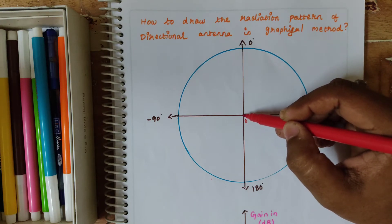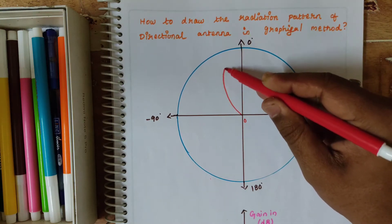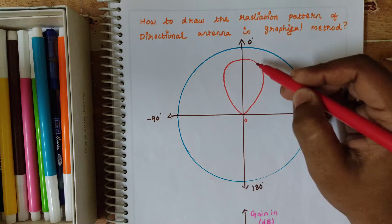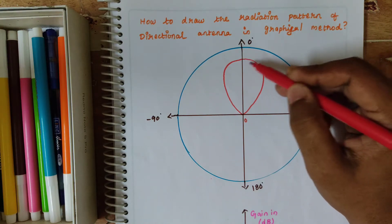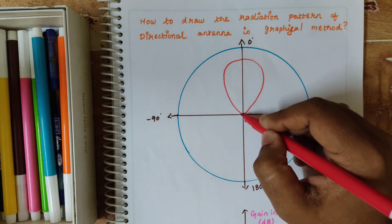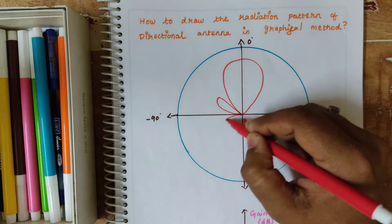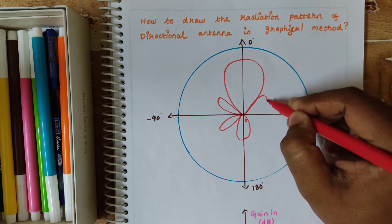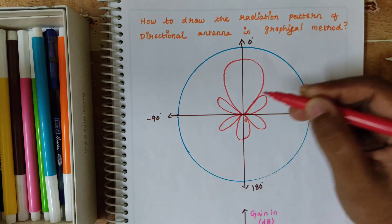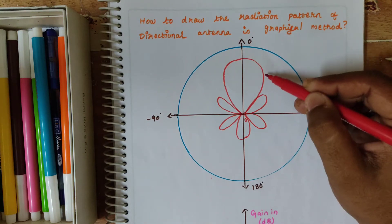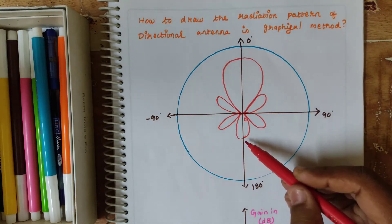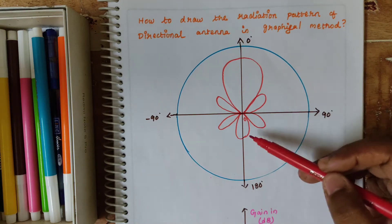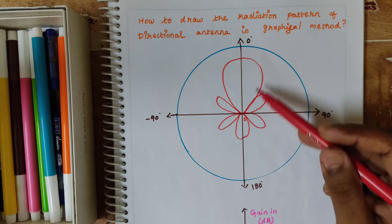It's an example method. For a directional antenna, we are having a radiation pattern in one direction. This one is the major lobe, these are the side lobes, and this one is the back lobe. For a directional antenna, the back lobe is exactly opposite to the main lobe.